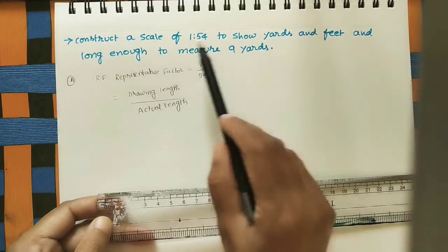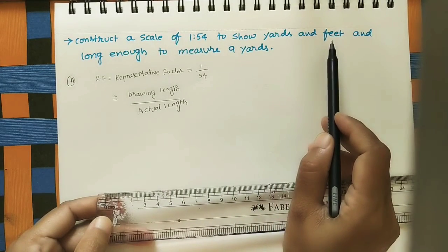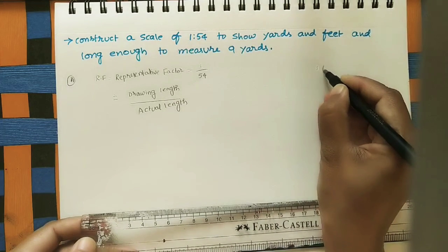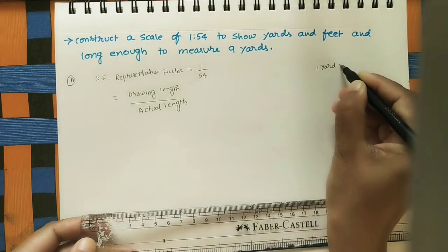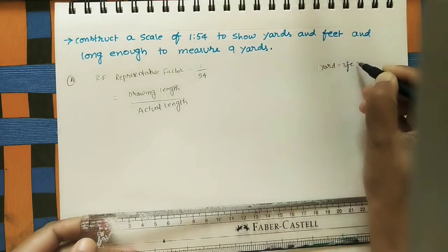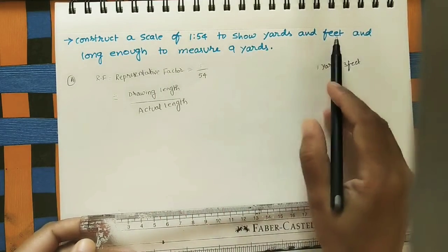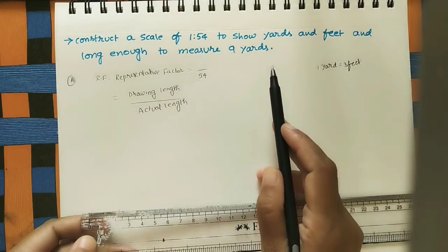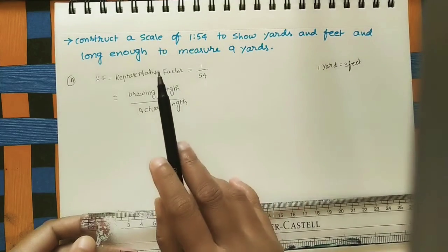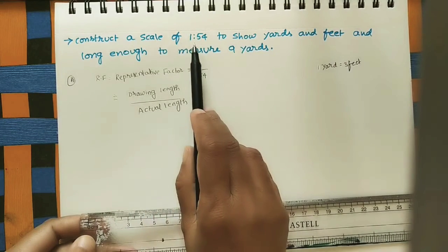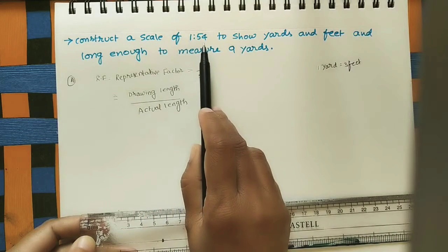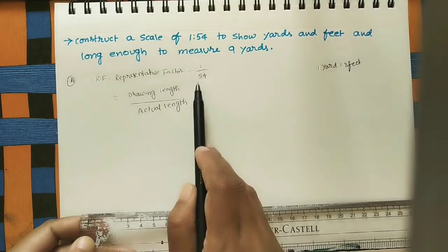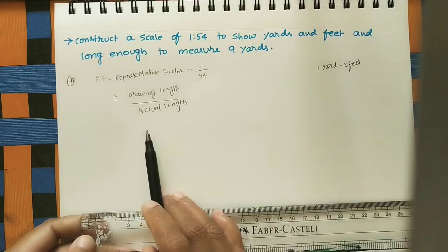One yard is equal to three feet — always remember that. This scale should show yards and feet. Only two consecutive units are there, so the type of scale is a plain scale. The RF value given is 1 is to 54, so RF, which is the representative factor, is equal to 1 by 54.